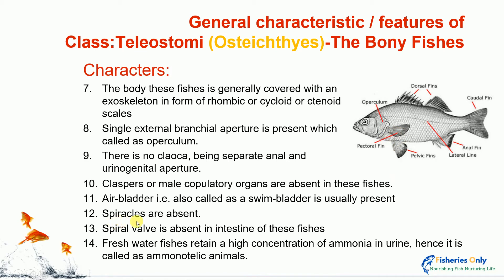Twelfth character: spiracles are absent. Spiracles are the first branchial aperture, mostly present in Elasmobranchii fishes — we can see them clearly in shark fish. Thirteenth character: the spiral valve is absent in the intestine of this species. This spiral valve is mostly present in the digestive system of Elasmobranchii fishes, but in bony fishes or Teleostomi fishes, it is absent.